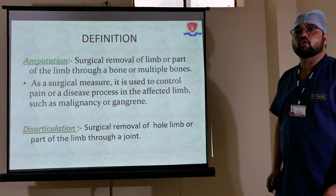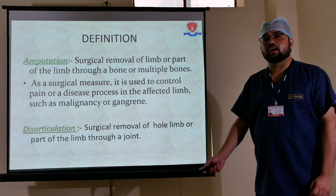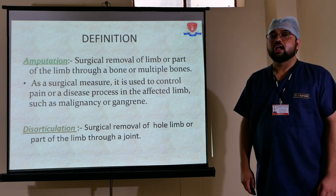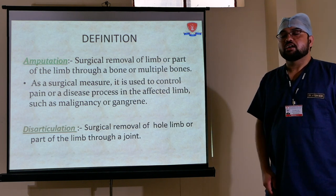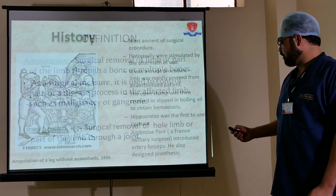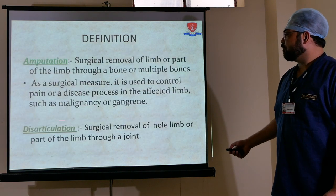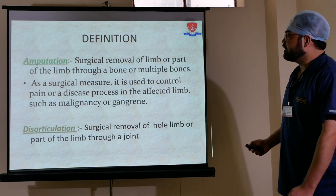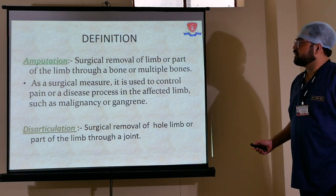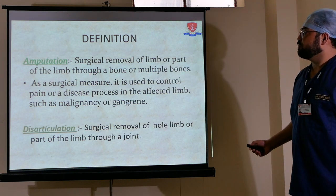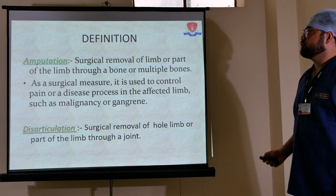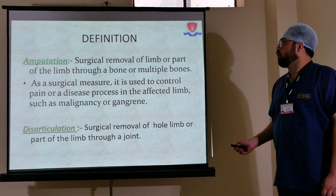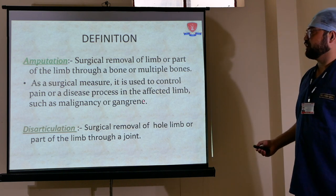First we will learn the definitions. Disarticulation is the surgical removal of all or part of a limb through a joint. Amputation is the surgical removal of a limb or part of a limb through a bone or multiple bones. As a surgical measure, it is used to control pain or a disease process in the affected limb.